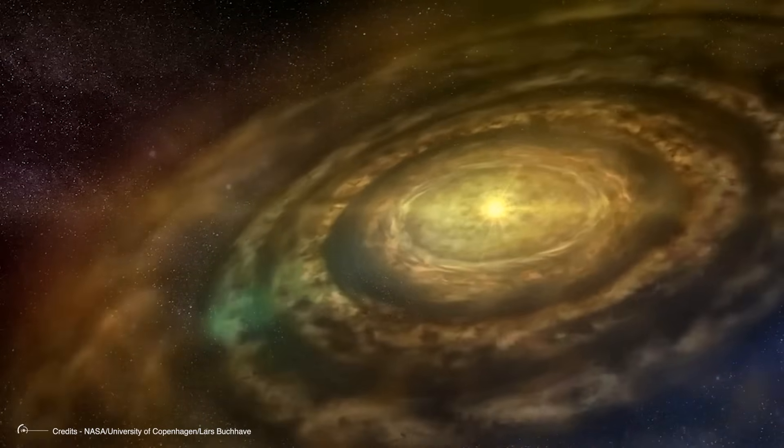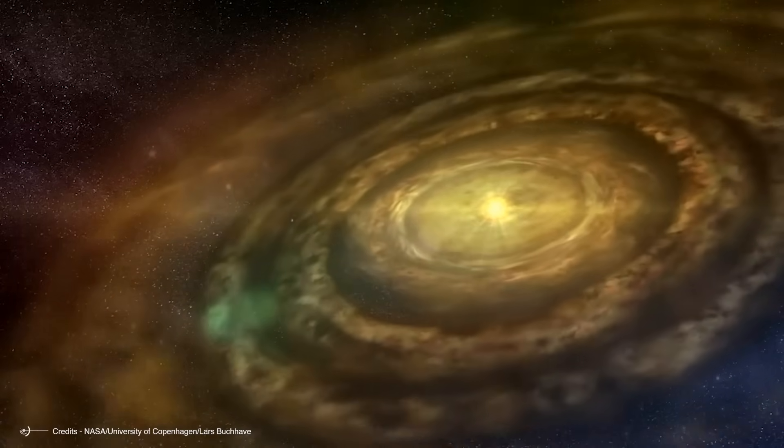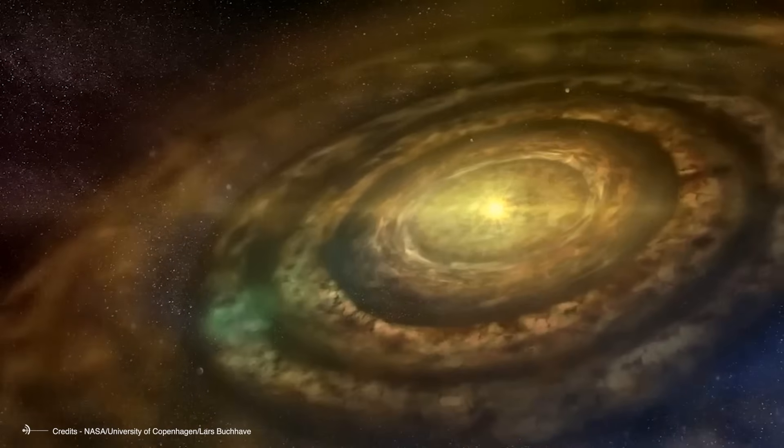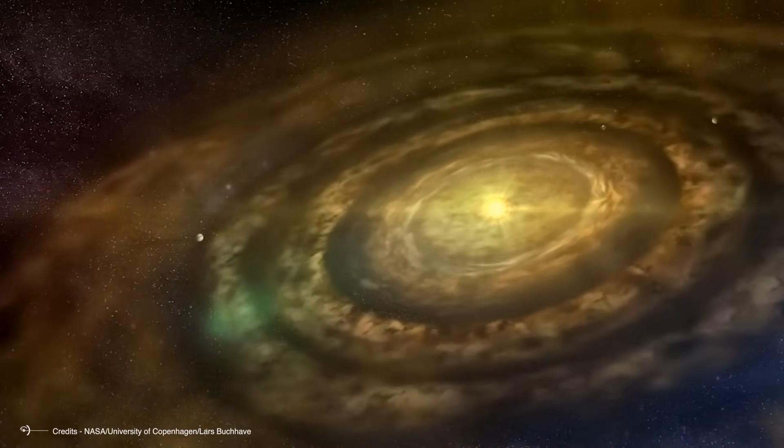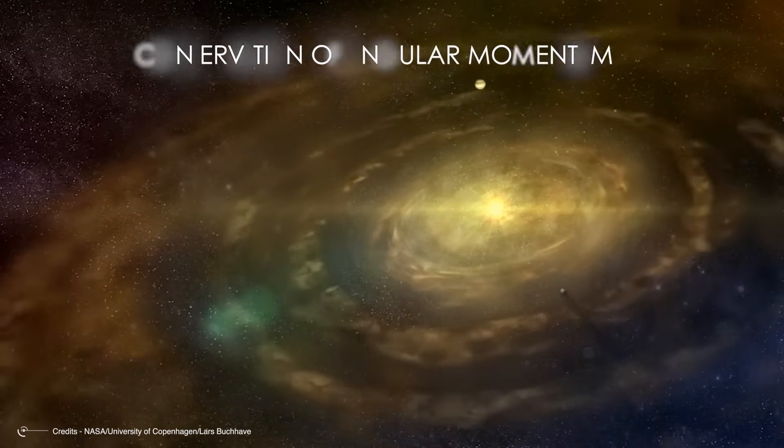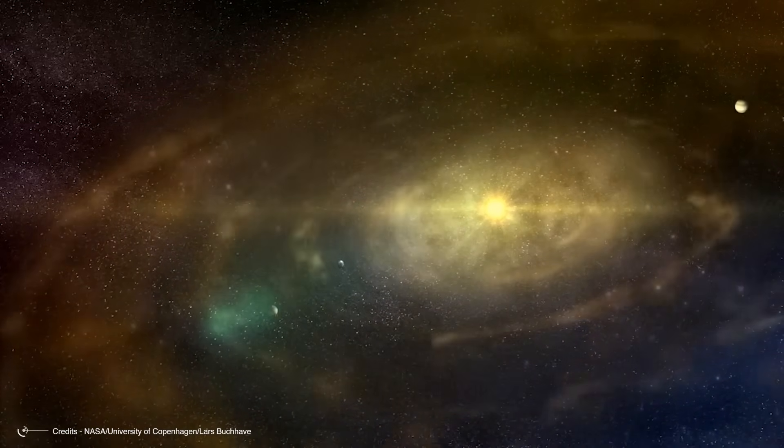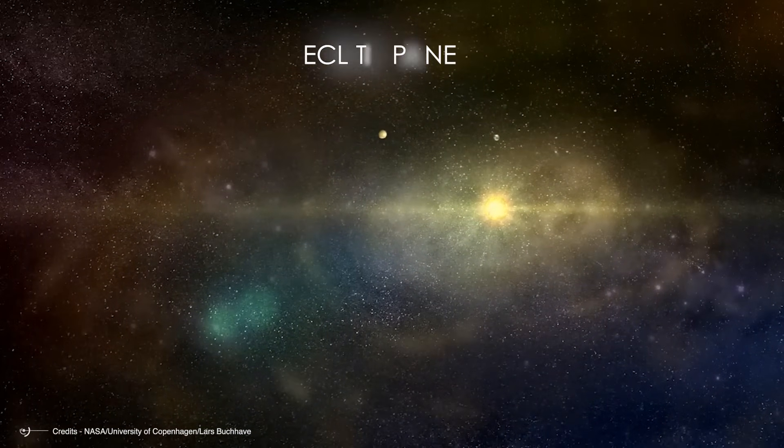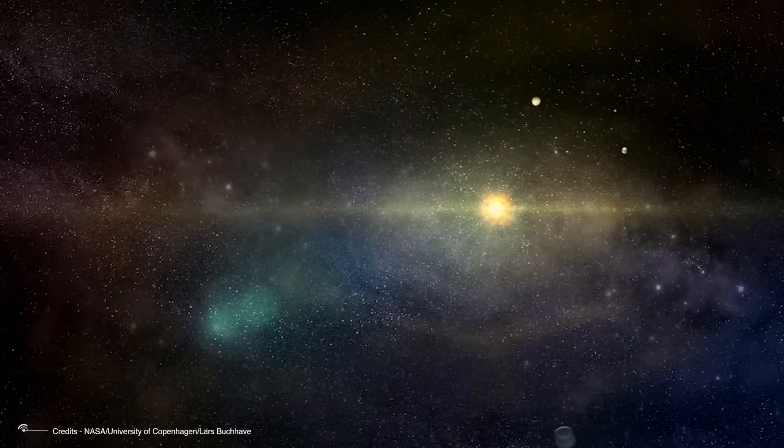Let's start with what the establishment does get right. Our solar system did indeed form from a swirling primordial cloud of gas and dust. As this material collapsed under gravity, conservation of angular momentum forced most of it into a spinning disk. This created what astronomers call the ecliptic plane, essentially the flat region where most planets orbit.